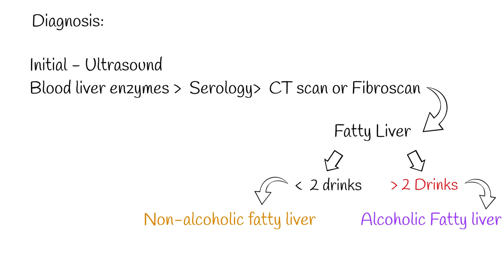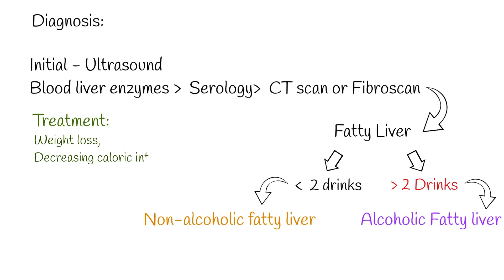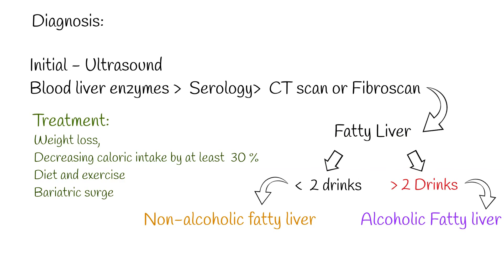The most effective treatment in the first two stages — simple fatty liver and non-alcoholic steatohepatitis — is weight loss, decreasing caloric intake by at least 30%, or approximately 750–1000 kilocalories per day. For most people with these two stages, weight loss via a combination of diet and exercise has been shown to improve or resolve the disease. In more severe cases, bariatric surgery can be an option. Vitamin E has also been shown to improve or resolve liver function.